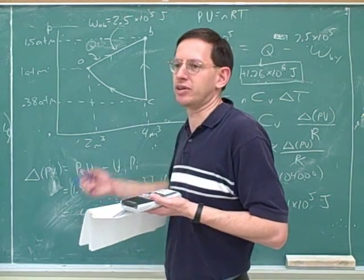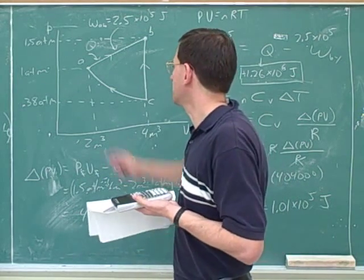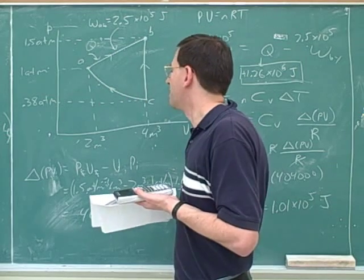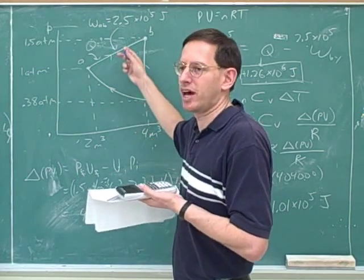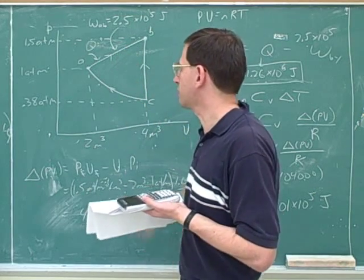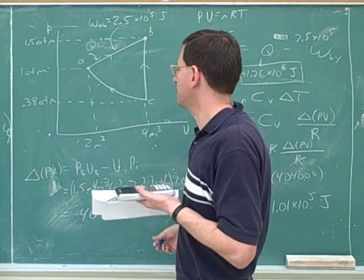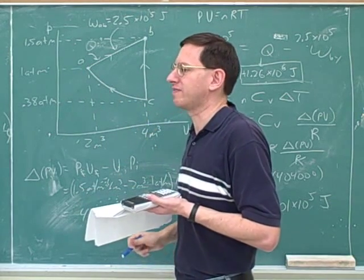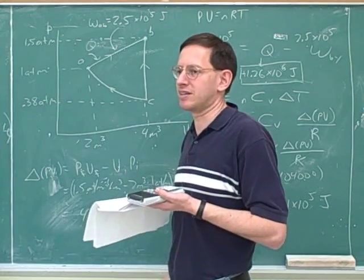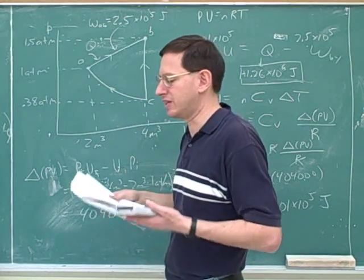We were thinking about doing this based on cycles and based on saying that delta U for the whole cycle is zero. But that was turning out to be much more complicated and confusing. You could do it that way, but this saves you a lot of time. In fact, you can see, even though this was a long problem, we never really had to use the idea that this was a cyclic process.